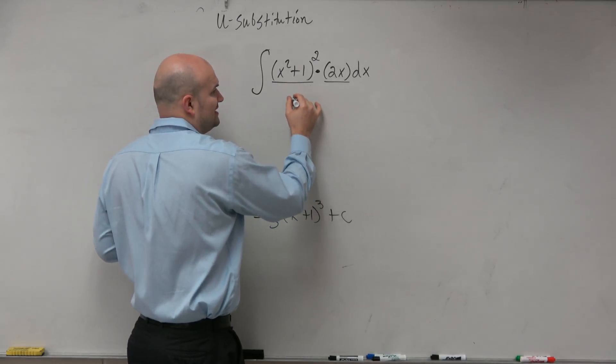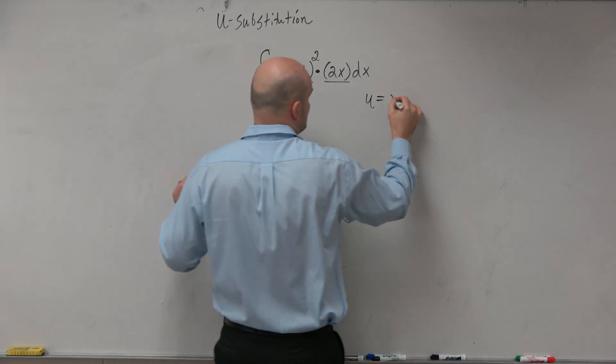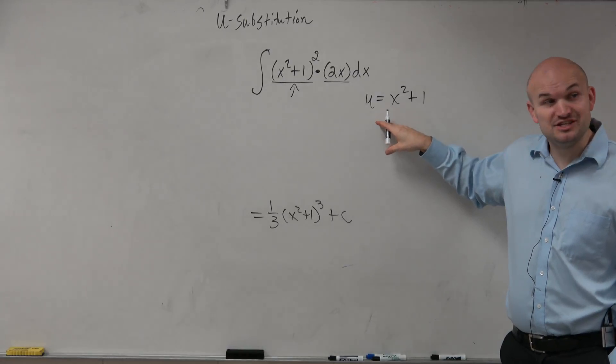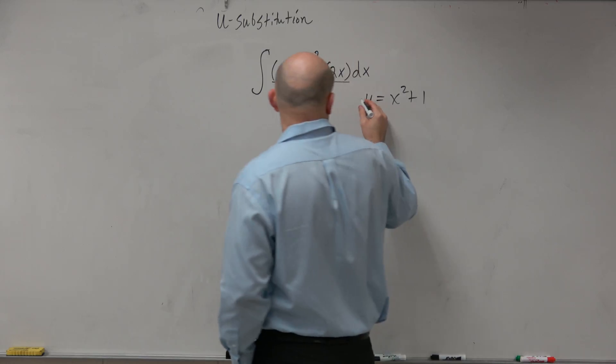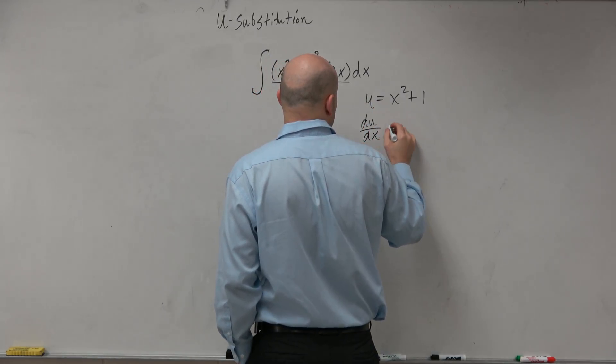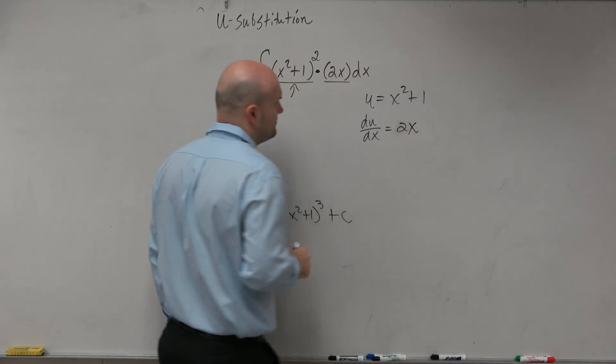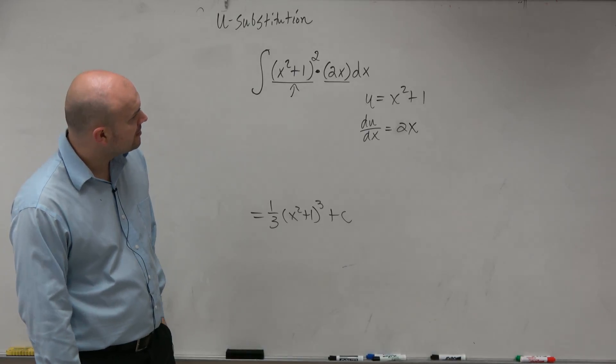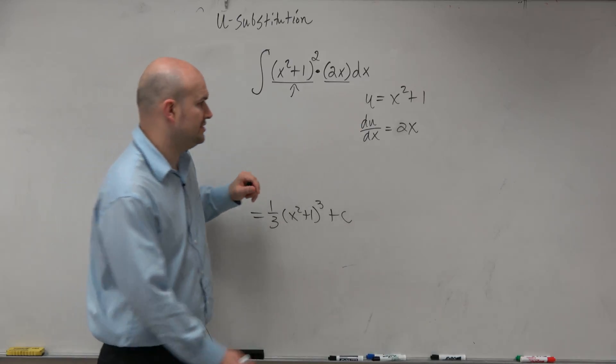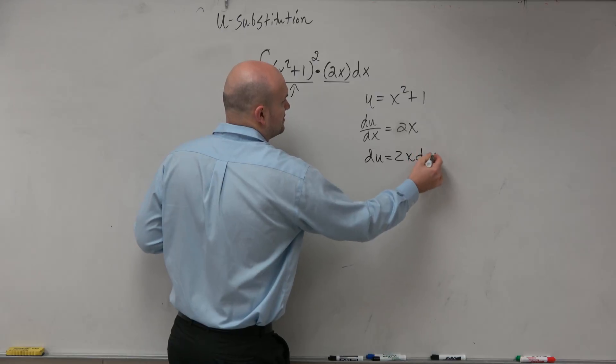So what we want to do is identify the inside function. We're going to call that u, hence the name u substitution. So u equals x squared plus 1. Now, what we want to do is differentiate u with respect to x. So if we differentiate u with respect to x, we get du over dx equals 2x. Now, what we're going to want to do is we are going to solve for du. So we'll multiply dx on both sides and we get du equals 2x dx.